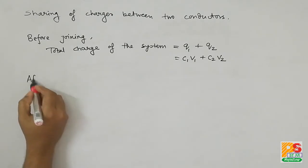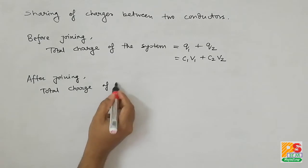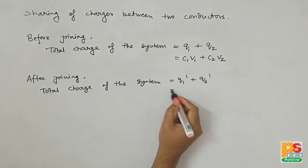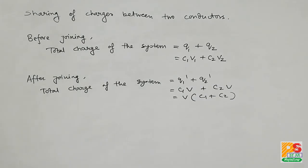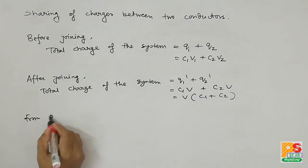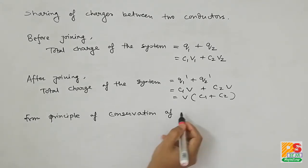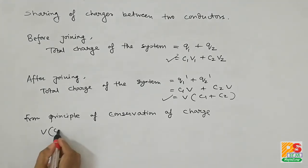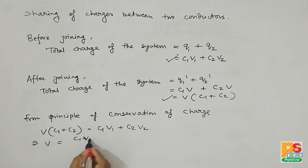After joining, both conductors reach a common potential V, so the total charge of the system is Q1 dash plus Q2 dash, where Q1 dash equals C1V and Q2 dash equals C2V. From the principle of conservation of charge, the total charge before and after joining must be equal, giving us C1V1 plus C2V2 equals C1V plus C2V.